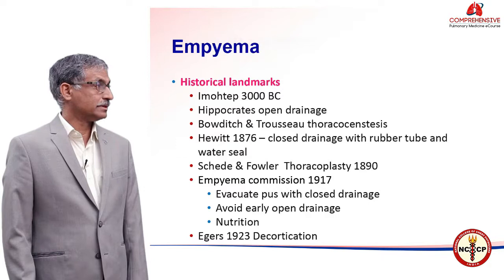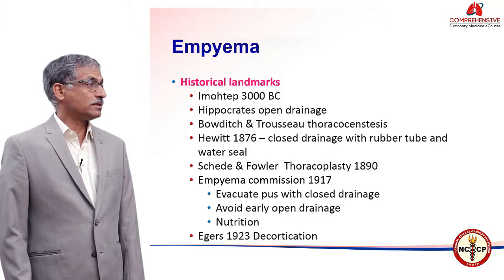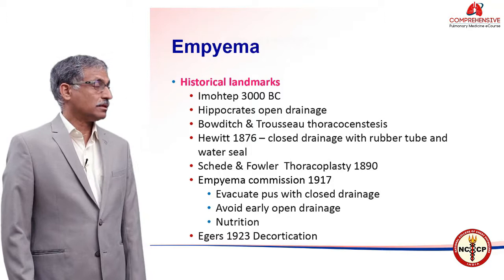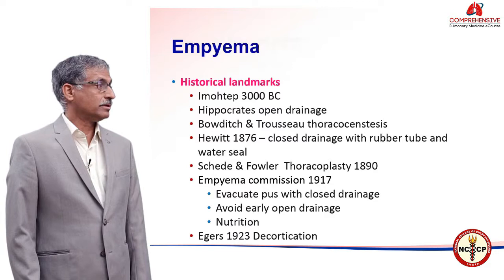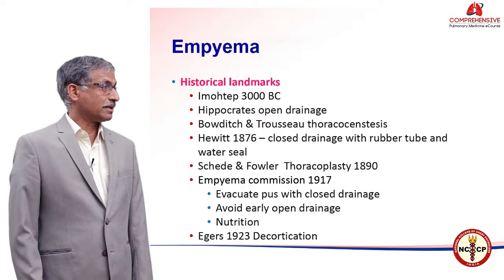Hewitt in 1876 described closed drainage with a rubber tube and water seal. They understood the physiology of the pleural space and the need to keep the pleural space physiology intact. Skid and Fowler in 1890 described thoracoplasty.